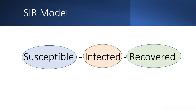An SIR model is an abbreviation for Susceptible Infected Recovered Model. The SIR model is used to model infectious diseases with immunity. In that case, you can group the individuals within the population into three classes.